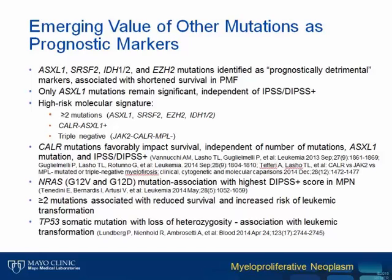Besides the three major driver mutations, there are also other mutations emerging as prognostic markers in PMF, such as ASXL1, SRSF2, IDH1/2, and EZH2 mutations. They were identified as prognostically detrimental and associated with short-term survival in PMF. However, after multivariate analysis, only ASXL1 mutation remained significant, independent of the current risk stratification scoring system. The high-risk molecular signature identified includes at least two mutations in the five genes, CALR-negative, ASXL1-positive, or triple-negative status, and the median survival in this group is about two to three years.